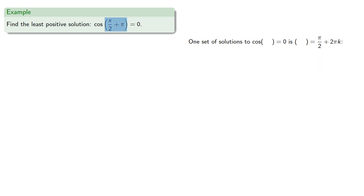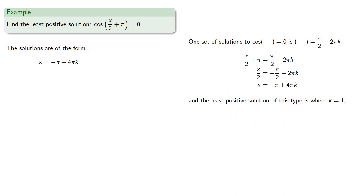So our argument will be equal to pi/2 plus 2pi k. And so x will be... And the least positive solution of this type is where k equals 1. And so the least positive solution will be 3pi.